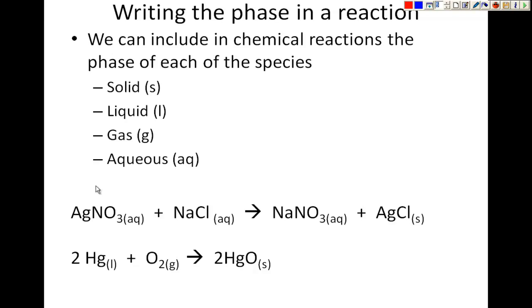But we're going to include some more information than what you might have done in the past. Here I have solid (s), liquid (l), gas (g), and aqueous (aq), and these are usually how we're going to find chemicals. If we have a chemical reaction, we're going to give a little bit more information to show what kind of phase or state that particular species is in. So here I have a chemical reaction: silver nitrate plus sodium chloride making sodium nitrate and silver chloride.